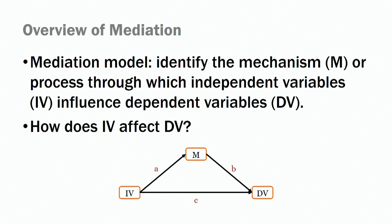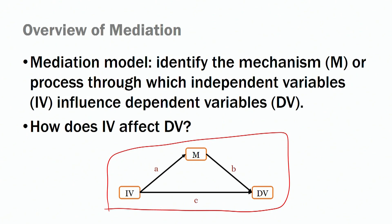As an example, how job meaningfulness influences job performance — what is the mechanism? That's why we need mediation models. And usually when you see mediation models in a paper, you'll have the independent variable leading to the dependent variable via the mediator — three different paths in the model: A, B, and C.